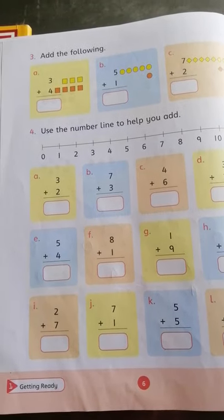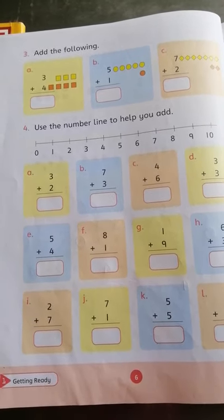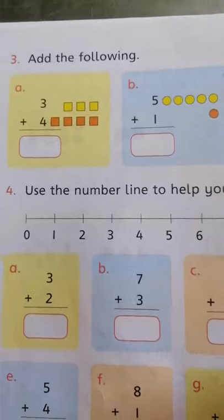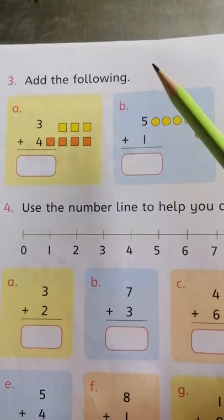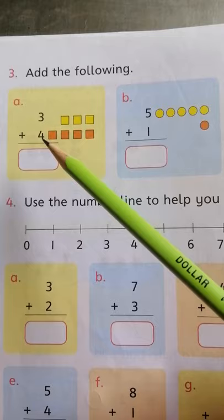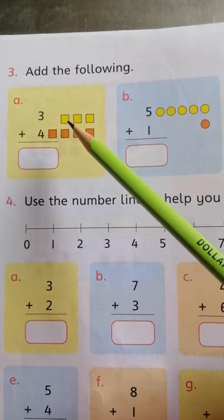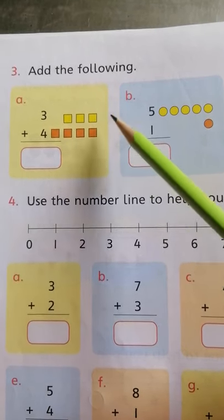Same as it is you will solve question number 3 and 4 of page number 6. In question number 3 you can see add the following. Here are 3 and 4. So 3 blocks are here and 4 blocks are here. Now count the whole.